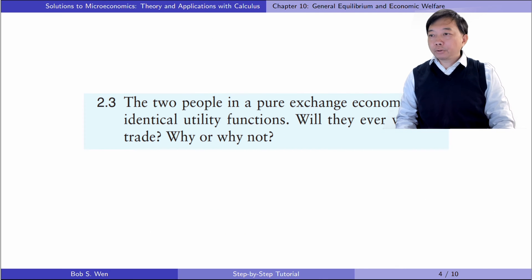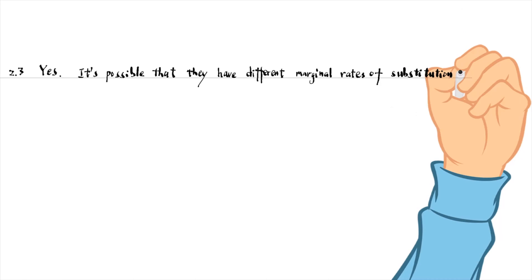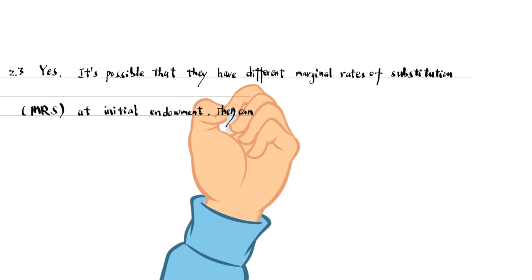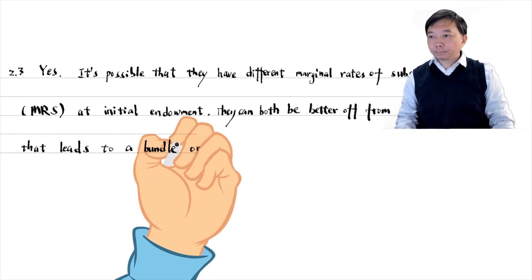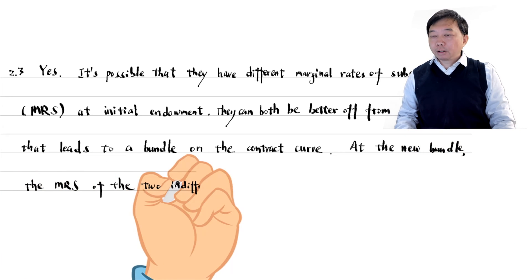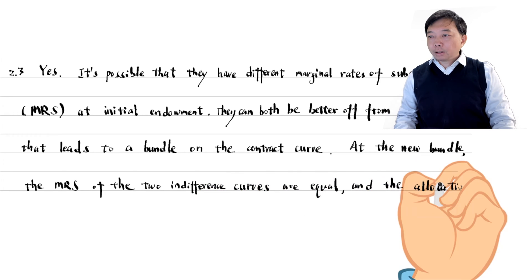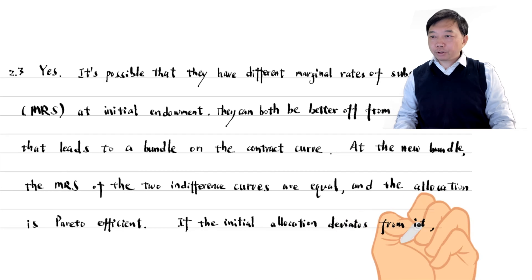Let's see exercise 2.3. The two people in a pure exchange economy have identical utility functions. Will they ever want to trade? Yes, it's possible that they have different marginal rates of substitution at the initial endowment. They can both be better off from a trade that leads to a bundle on the contract curve. At the new bundle, the marginal rates of substitution of the two indifference curves are equal and the allocation is Pareto efficient. If the initial allocation deviates from this, the two people can trade to achieve Pareto efficiency.